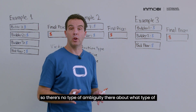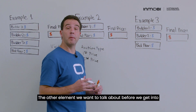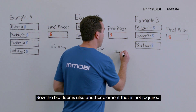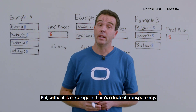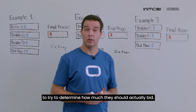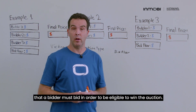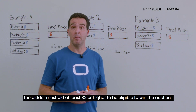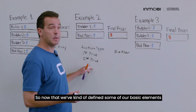The other element we want to talk about before getting into our examples is the bid floor. The bid floor is also not a required element, but without it there's a lack of transparency and the bidder is in the dark about how much they should actually bid. The bid floor is the minimum amount a bidder must bid in order to be eligible to win the auction. So if the bid floor is two dollars, a bidder must bid at least two dollars or higher to be eligible.